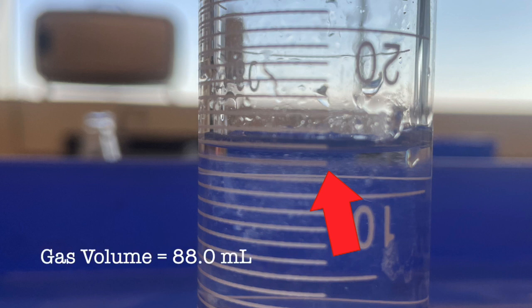After the reaction has completed, you can see the level of the liquid inside the graduated cylinder is at about 12.0 milliliters based on the bottom of the meniscus. That means the gas volume inside the cylinder is 88.0 milliliters.